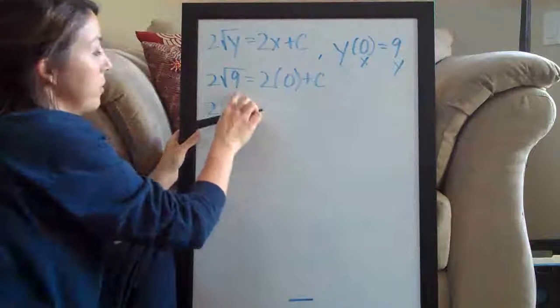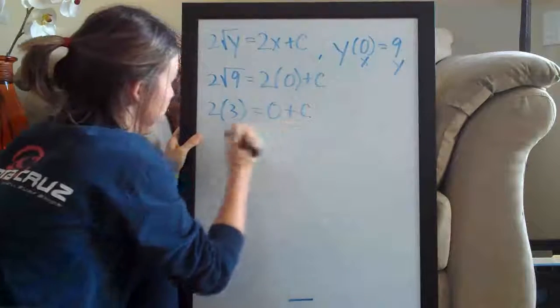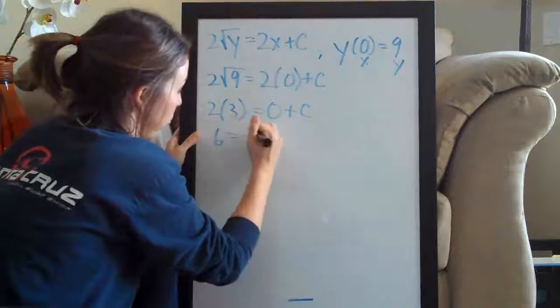So as you can see, the square root of nine is three, so 2 times 3 equals 0 plus C, therefore 6 equals C.